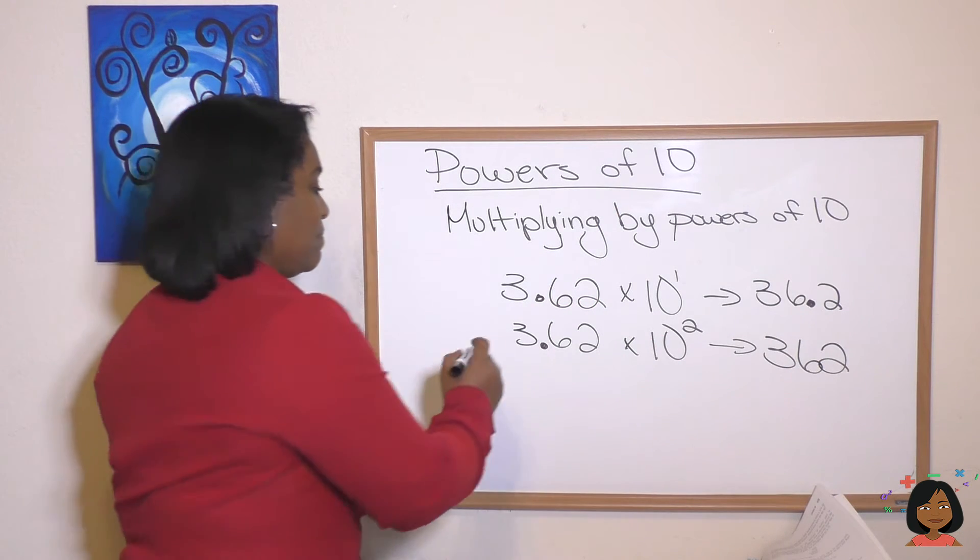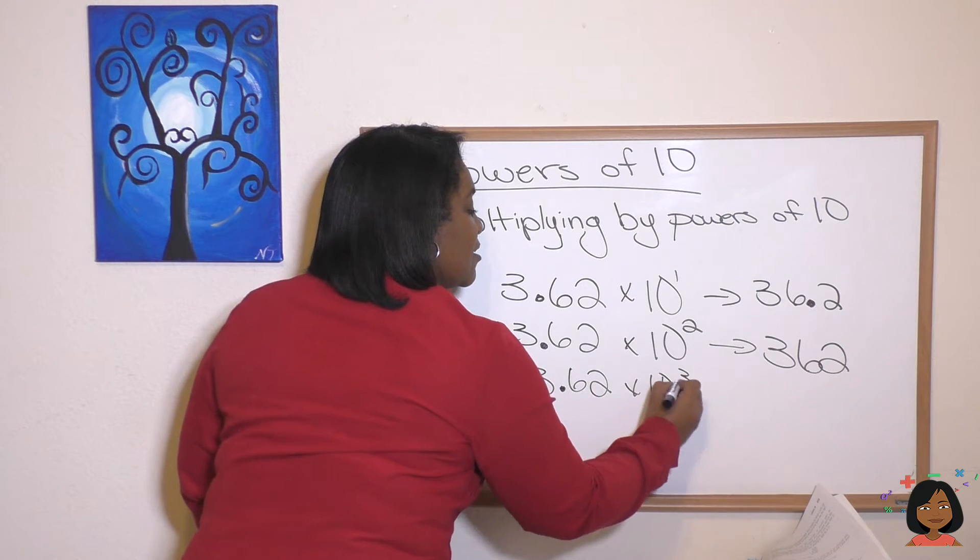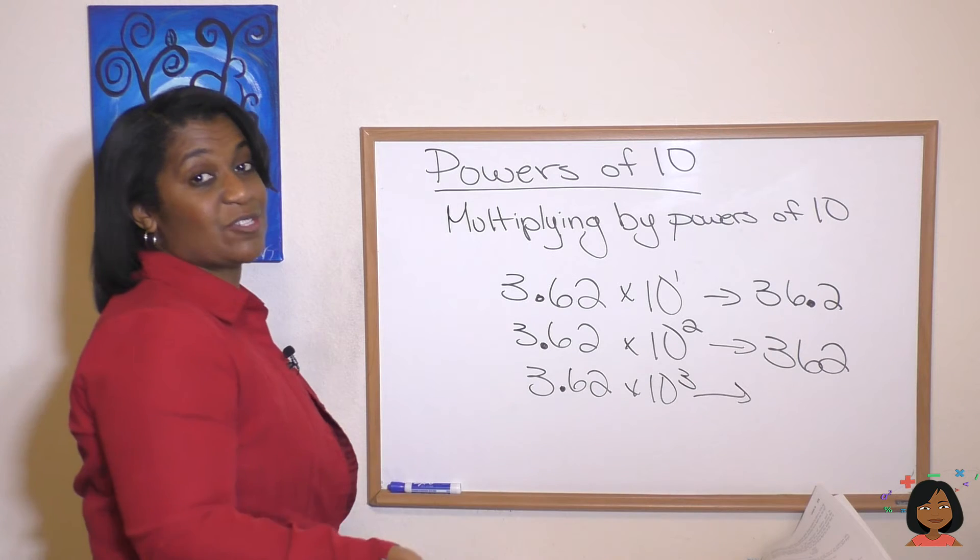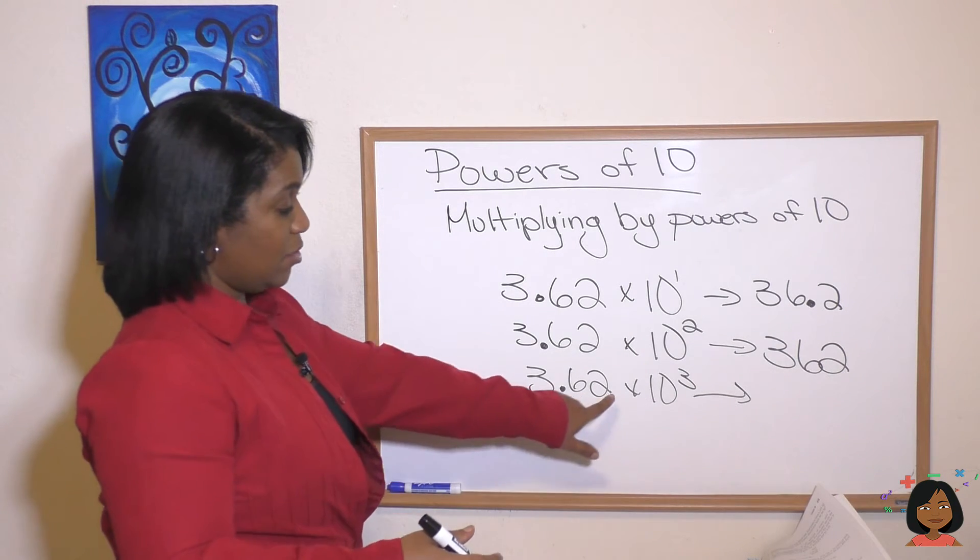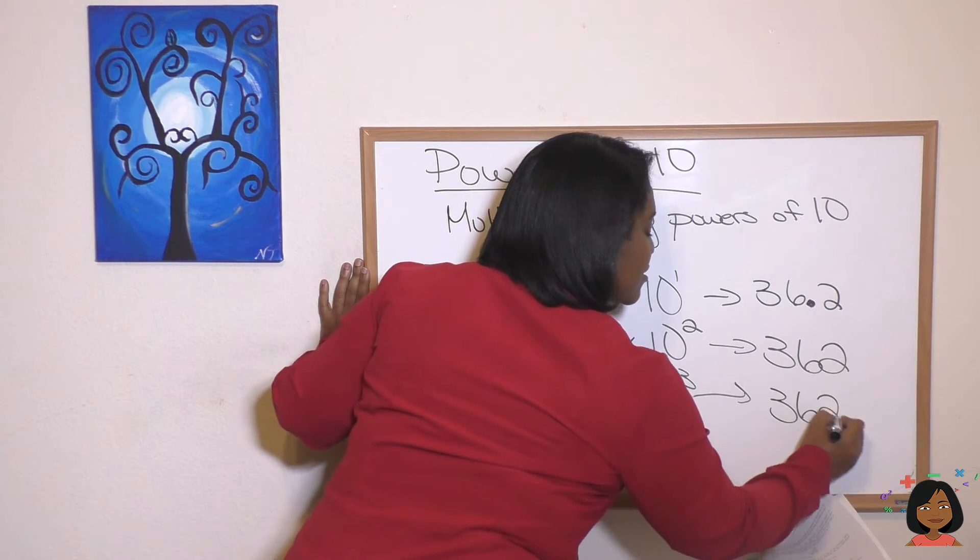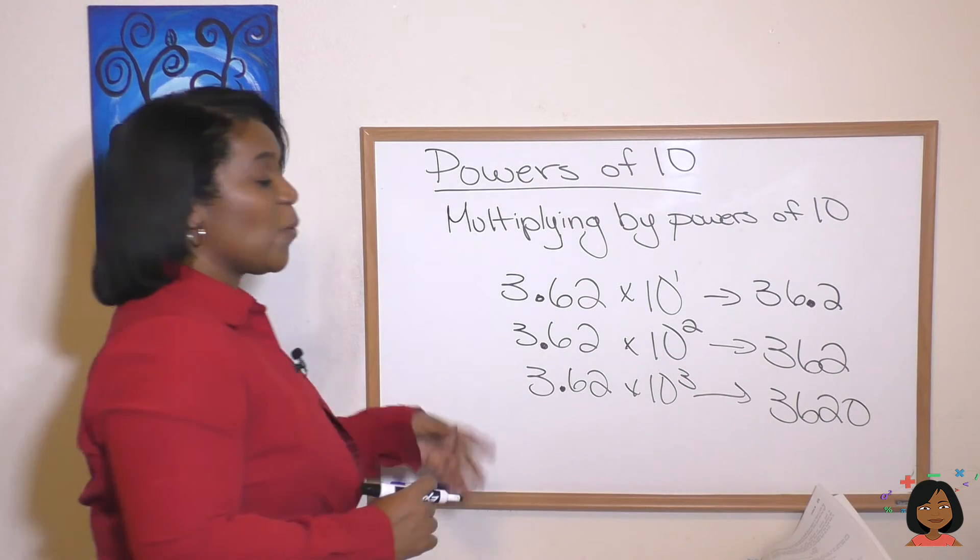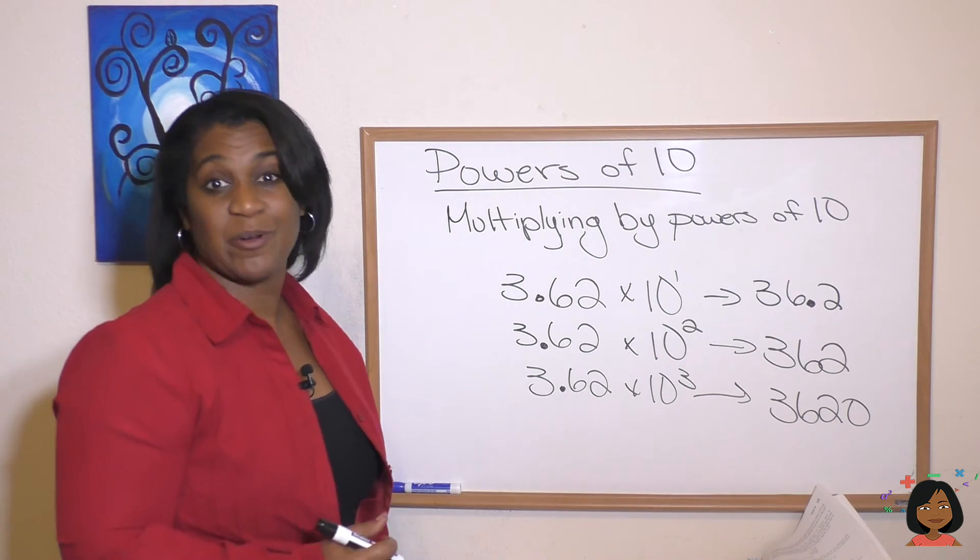Let's do it again. 3.62 times 10 to the third. I bet you can understand we're going to move our decimal places three to the right. One, two. And we're going to have to add a zero as a placeholder to make that work. Three, six, two, zero.